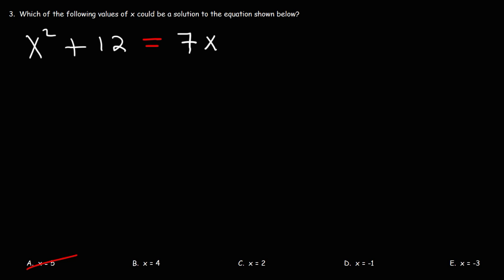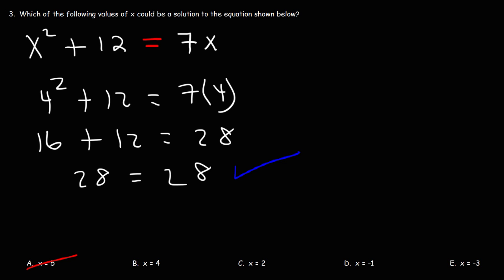Let's try answer choice B. So let's replace x with 4. And let's see what's going to happen. 4 squared is 16 and 7 times 4 is 28. 16 plus 12 is 28. So the left side matches with the right side, which means that answer choice B is a solution to the equation.